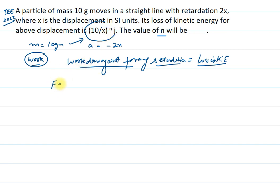First of all, we write the expression for force. The retardation force is simply F = mass × acceleration, so F = m × (-2x). This is the expression for force, and then we can easily calculate the work done.